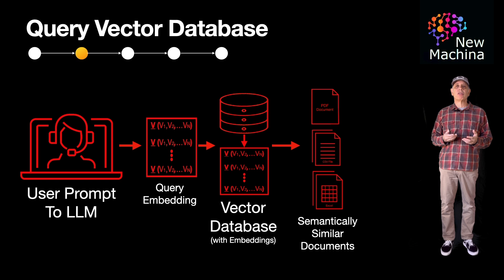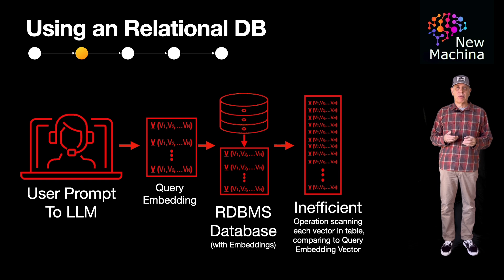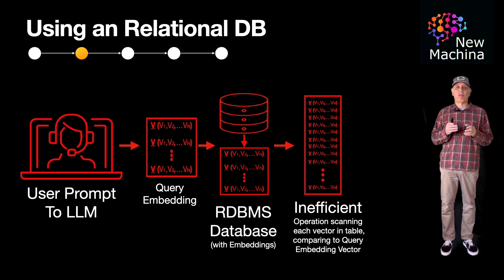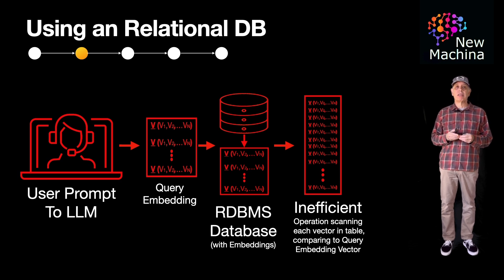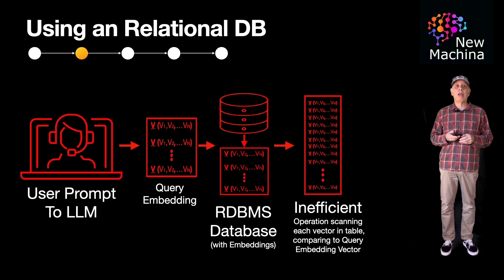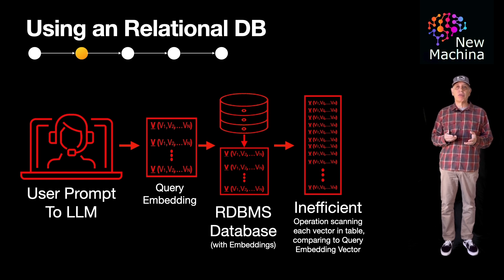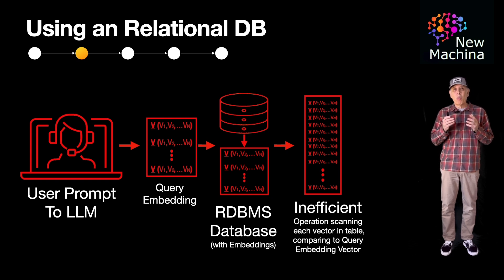A common question that comes up is: why can't you use a relational database to store your vector embeddings? Relational databases are ideal for transactional workflows and do support a variety of indexing techniques. You can store vectors in a relational database and execute queries against tables with these vectors — so yes, functionally it would work. But the problem is that relational databases do not have native query support for similarity search algorithms, nor do they support indexing strategies optimized for vectors.